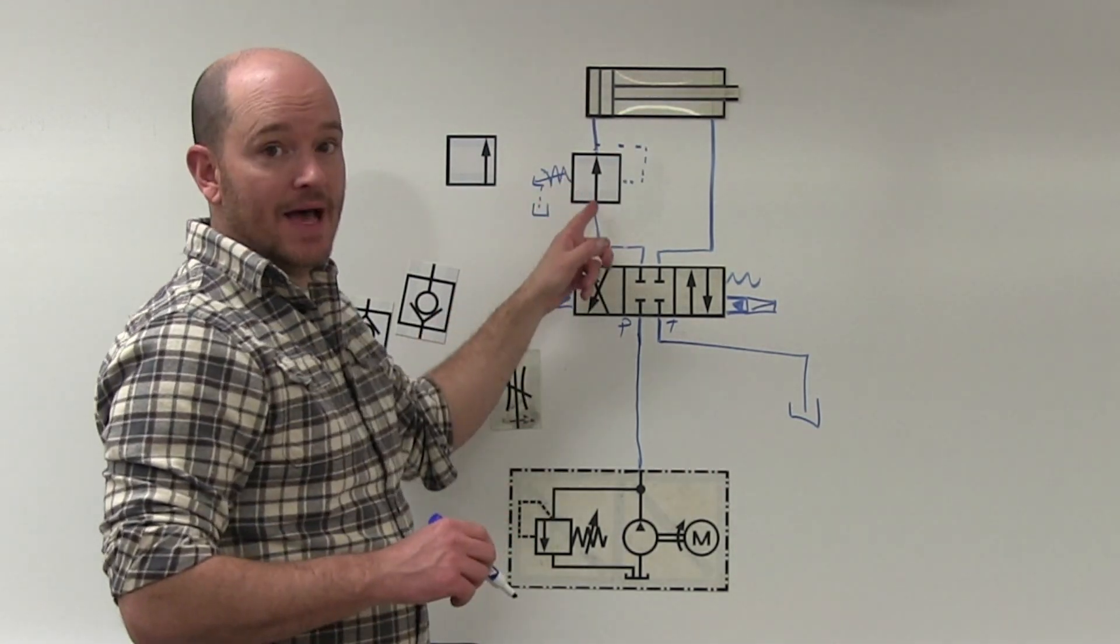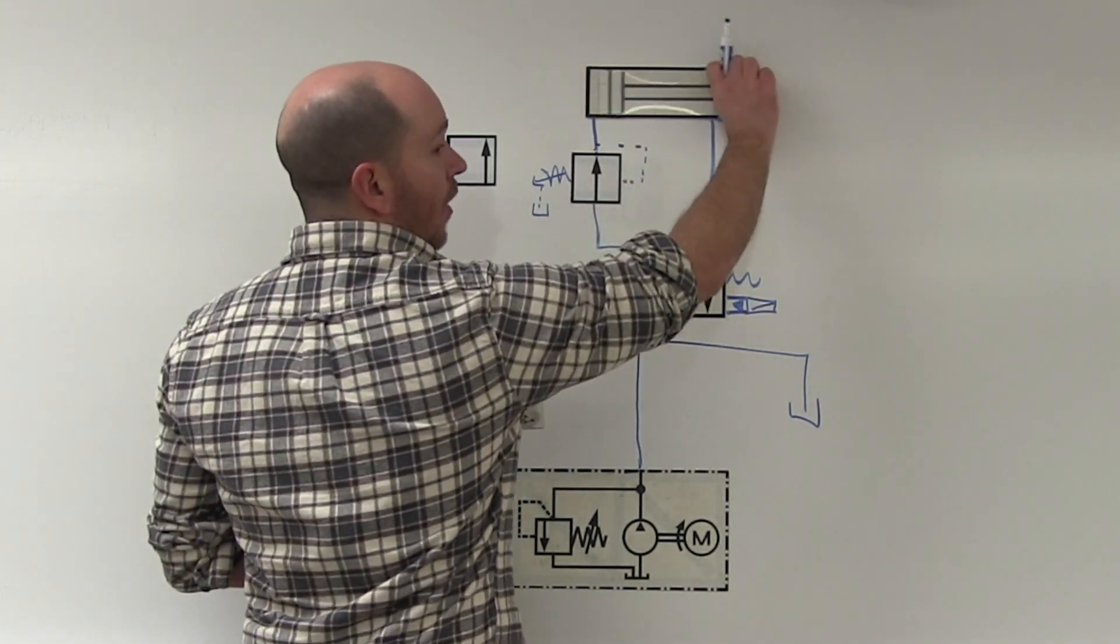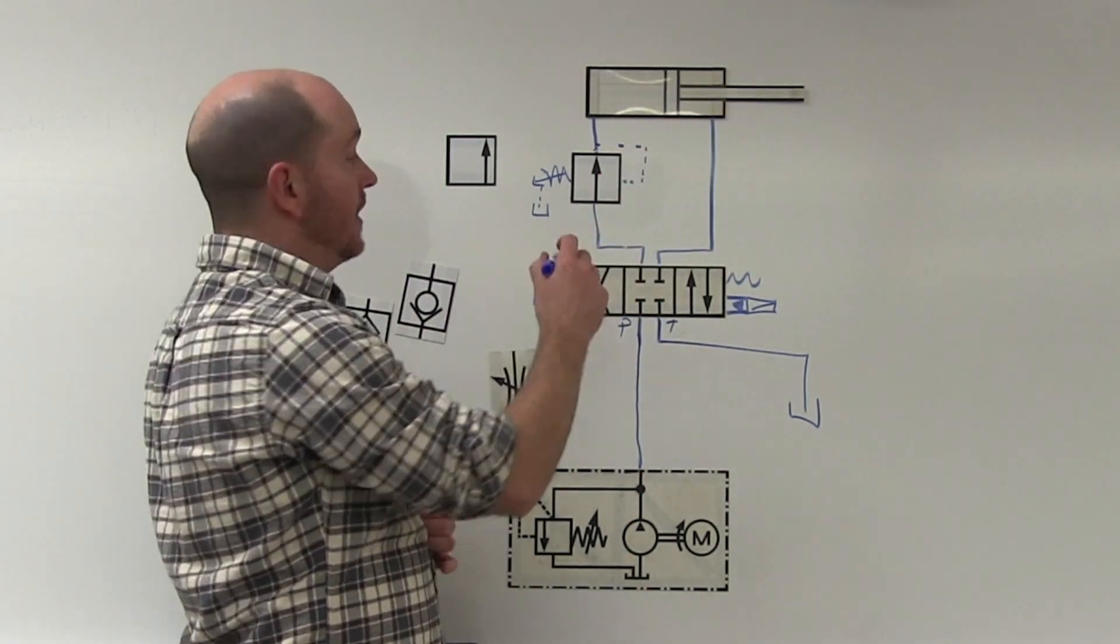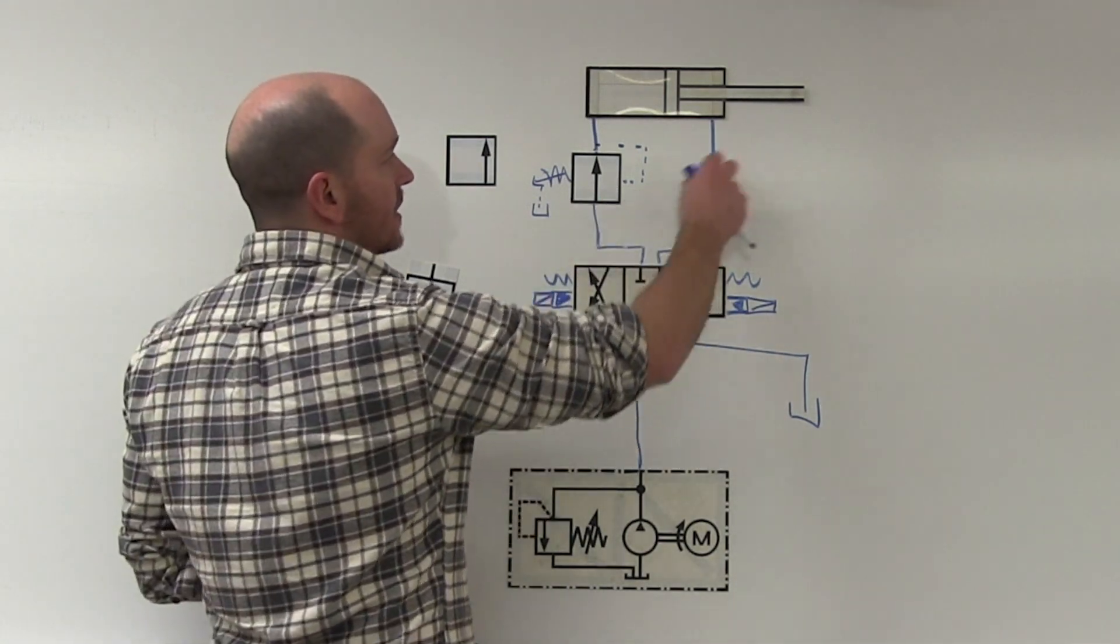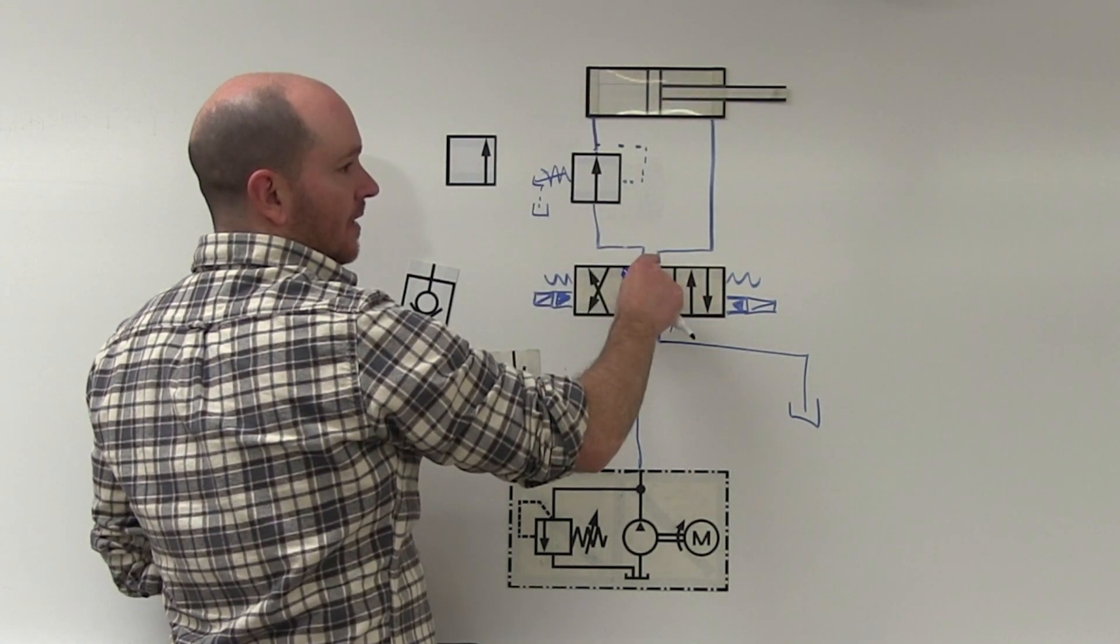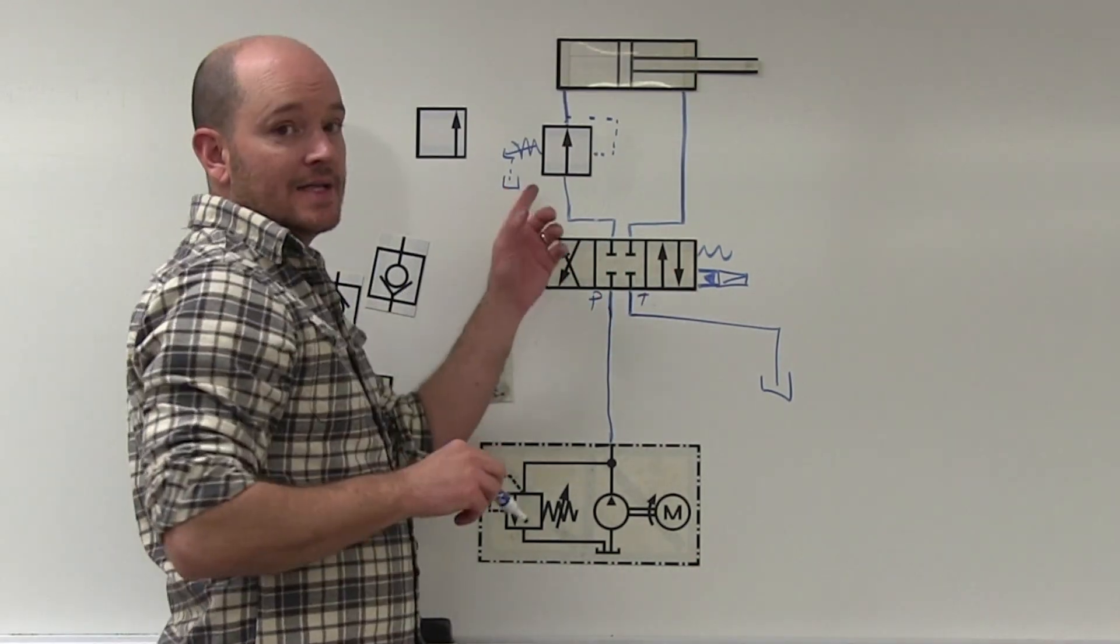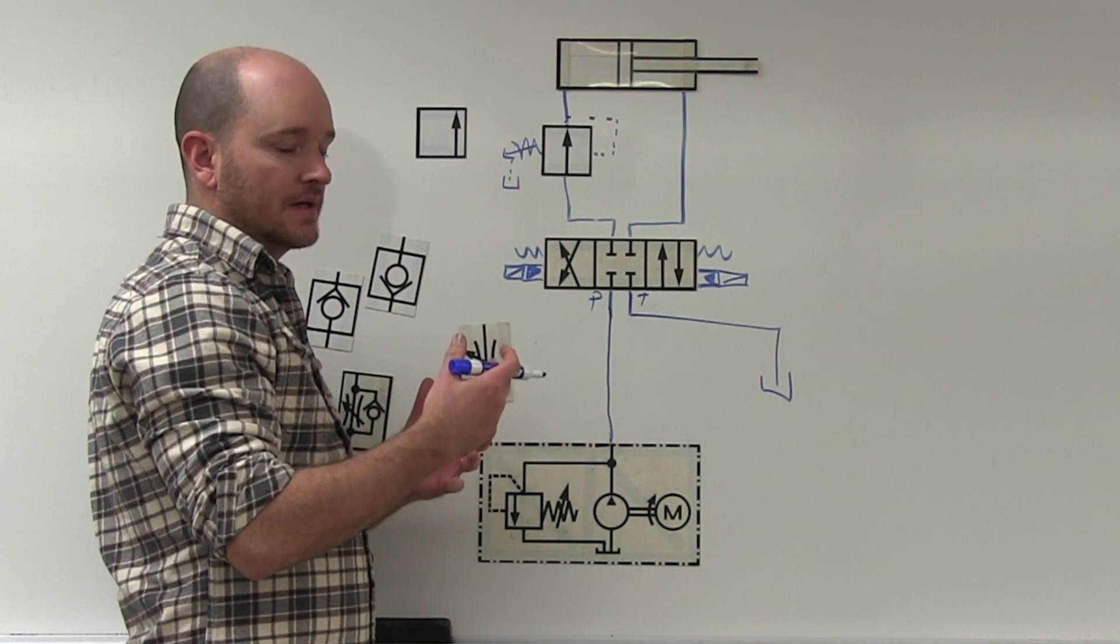I don't need a bypass check valve here because this is normally open. So on most valves, when you're using a normally open one, which is basically your pressure reducing valve in hydraulics, when it comes back, it has a path to come through here. So it does not require a bypass check valve, unlike the flow control valve that we talked about before.